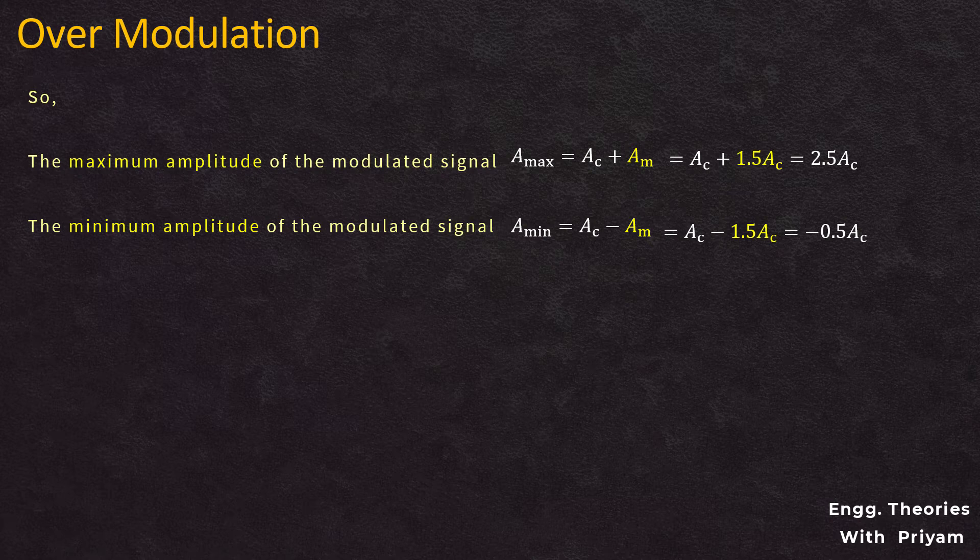We will understand these three types of modulation using MATLAB. We will plot the message signal, the carrier signal, and the amplitude modulated signal for different values of the modulation index k, and see how under modulated, perfectly modulated, and over modulated waves look, along with their minimum and maximum amplitudes.